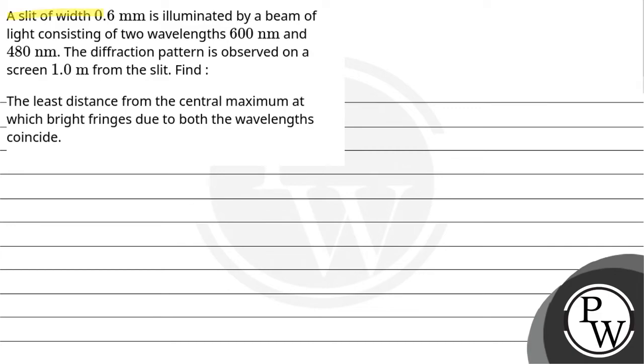Let's read the question. A slit of width 0.6 mm is illuminated by a beam of light consisting of two wavelengths, 600 nanometer and 480 nanometer.